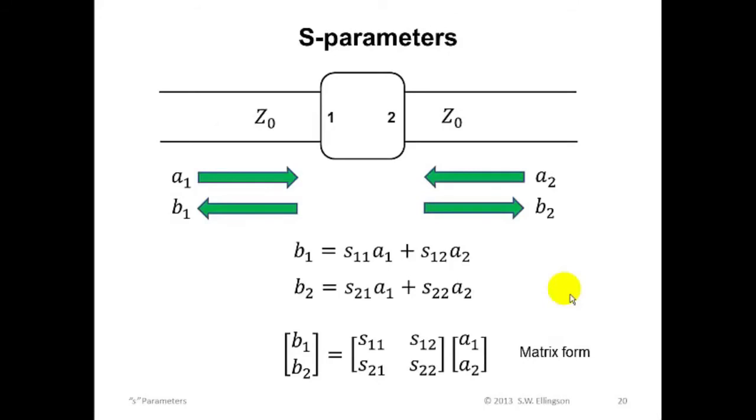Okay, so now let's zoom out a bit and consider what we've got. We have the power waves A one and B one at port one and A two and B two at port two. Each power wave is defined to be a linear combination of the total voltage and the total current at the associated port. We worked this out in the previous slides.